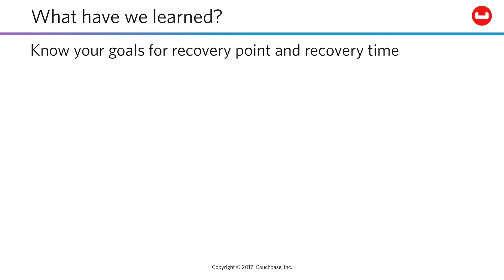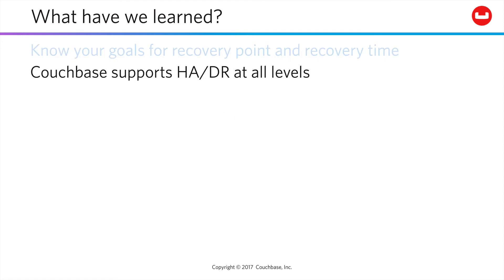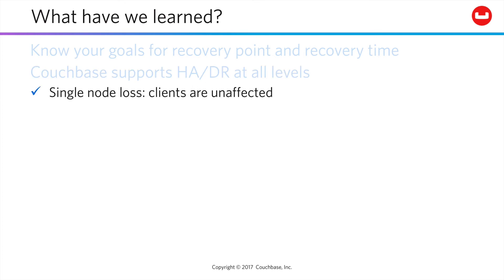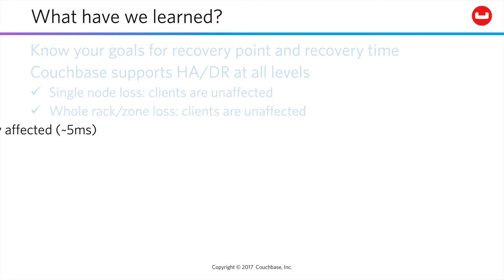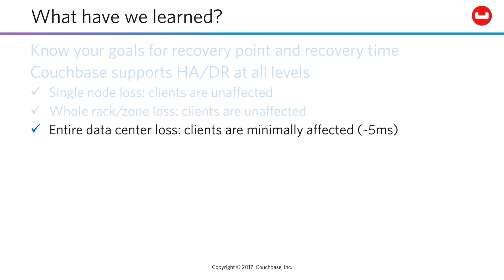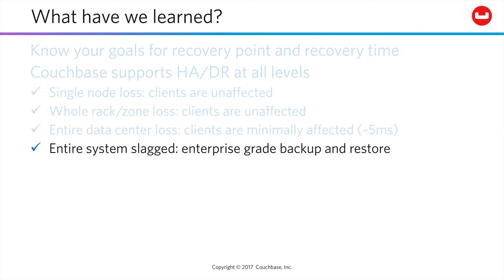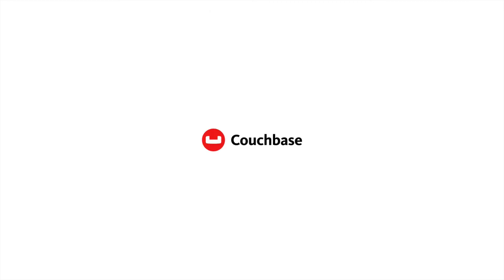We all need goals — these include recovery point and recovery time objectives, so you can assess which Couchbase features to implement to meet them, because we can. We support high availability and disaster recovery at all levels. With a single node loss, clients are unaffected. Same thing if you lose an entire rack or availability zone. Even if you lose an entire data center, the client impact can be measured in single-digit milliseconds. It takes simultaneous slagging of all your data centers to force you into restoring from backup. In the next lesson, we'll drill into these features a bit for better understanding. Come on back.